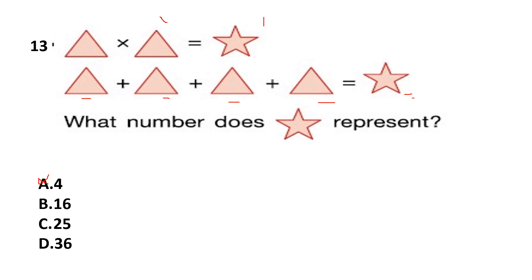From this second option, option B is 16. Let's assume star is 16. So if star is 16, this triangle is 4. 4 multiplied by 4 is 16. So this is 4, plus 4 is 8, plus 4 is 12, plus 4 is 16. So this star is also 16. This star is also 16. Answer is option B because 16 is correct for both the equations. Answer is option B.